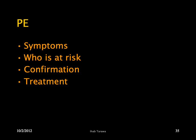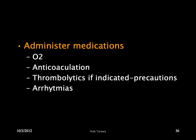Treatment of PE is supportive: oxygenation. For those who are very sick and in shock, anticoagulation and possibly intubation are needed. Administer oxygen and anticoagulation. For patients with hemodynamic instability or refractory hypoxemia, thrombolysis can be used. Arrhythmia should be treated by addressing the underlying cause, and often it will resolve on its own.